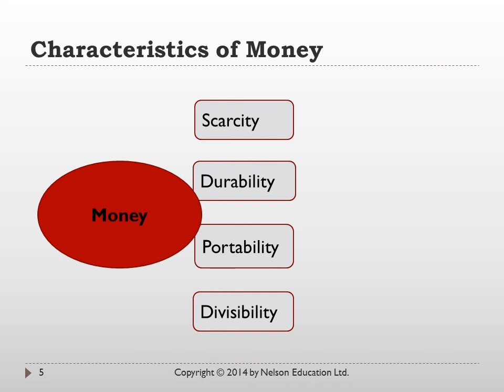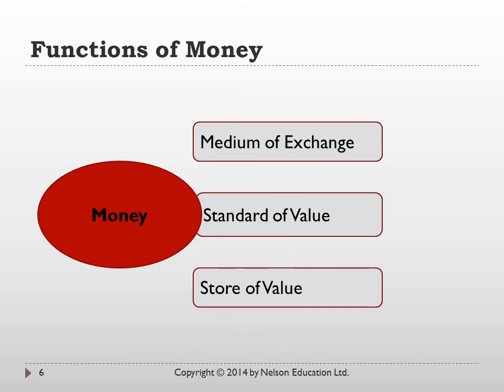Now let's take a look at some of the functions of money. For money to be acceptable, it has to function as a medium of exchange, a standard of value, and a store of value — those are the three primary functions. As a medium of exchange, money makes transactions easier. Somebody is selling something that you want, and money forms the basis of exchanging for the good or service you are about to receive, which is much easier than a barter system.